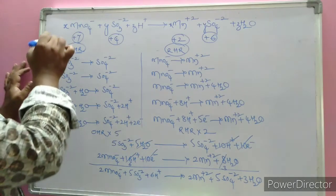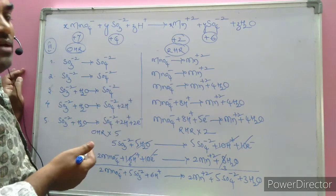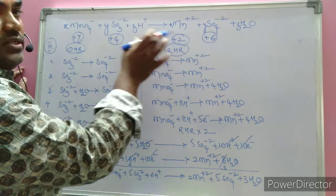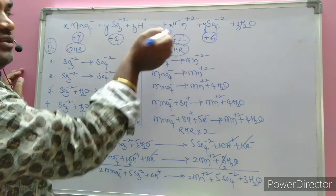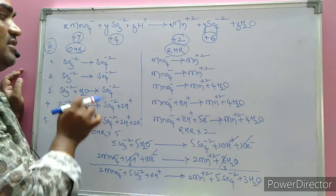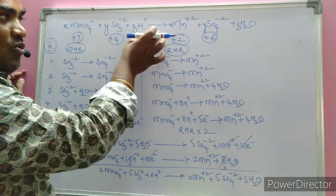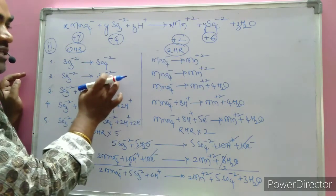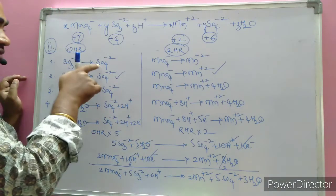This is the third method to solve redox equation coefficients, most prominently used at board level examinations like the Plus One level. We identify the oxidation states: manganese goes from +7 to +2 (reduction), and sulfur from +4 to +6 (oxidation). Step 1 is to split the equation into two half-reactions: the oxidation half-reaction and the reduction half-reaction.